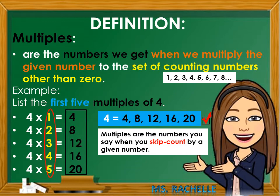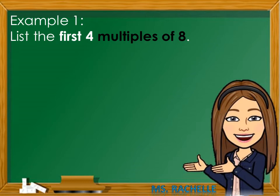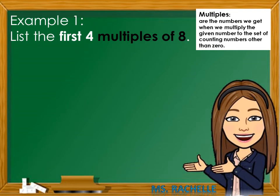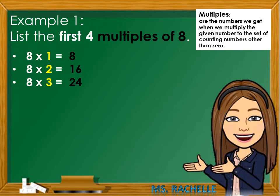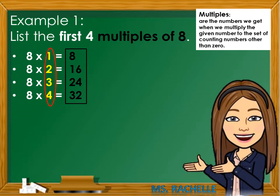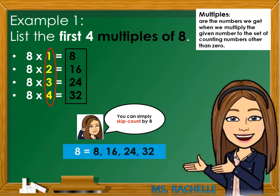Let's have more examples. Example number 1: List the first 4 multiples of 8. Multiples are the numbers we get when we multiply the given number to the set of counting numbers other than 0. Our given number is 8. We need to multiply 8 to the first 4 counting numbers: 8×1=8, 8×2=16, 8×3=24, 8×4=32. So 8, 16, 24, 32 are the first 4 multiples of 8. You can also use skip counting by 8.